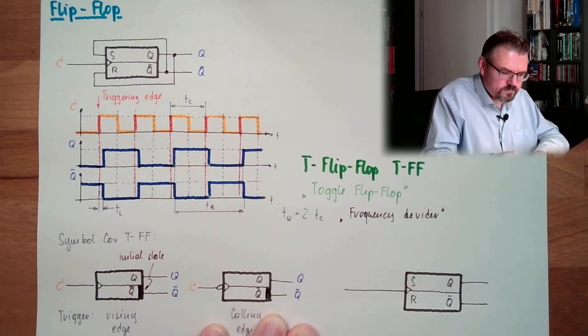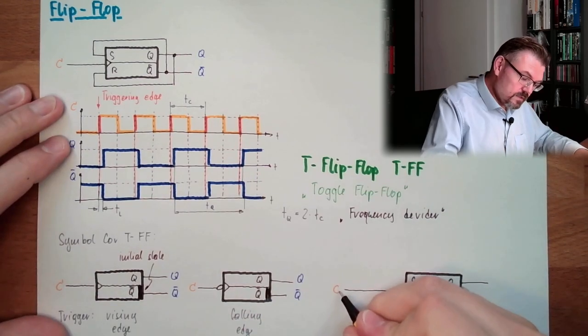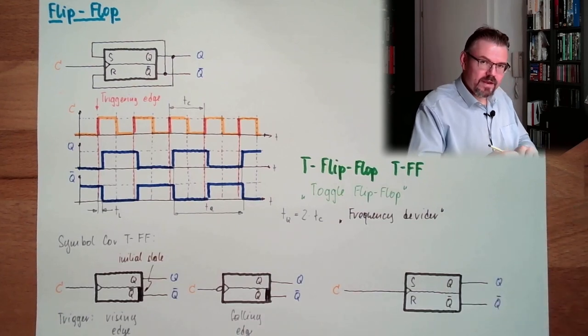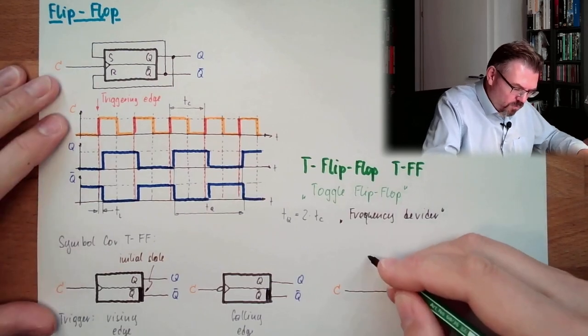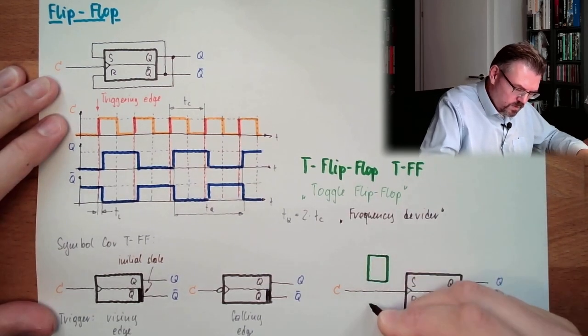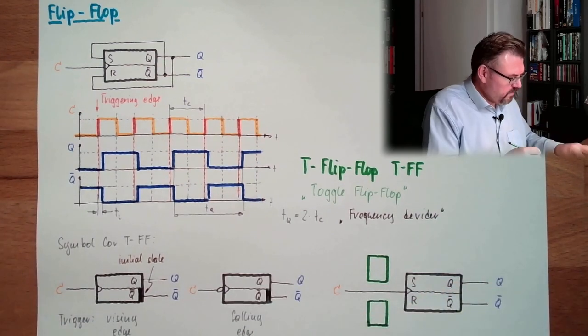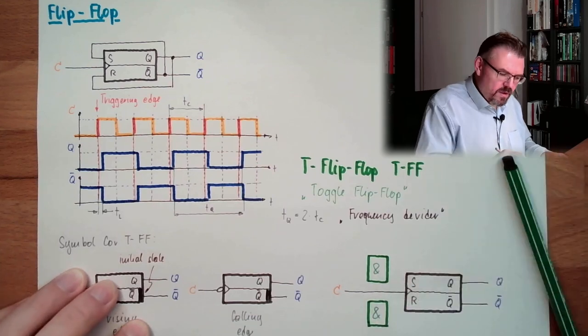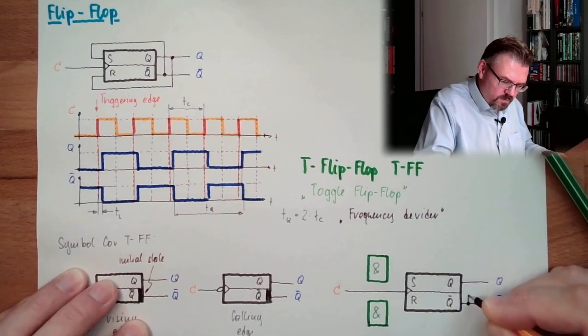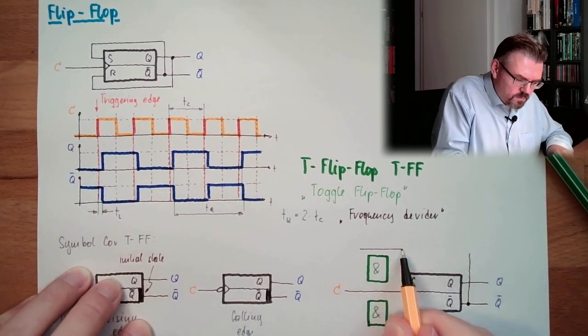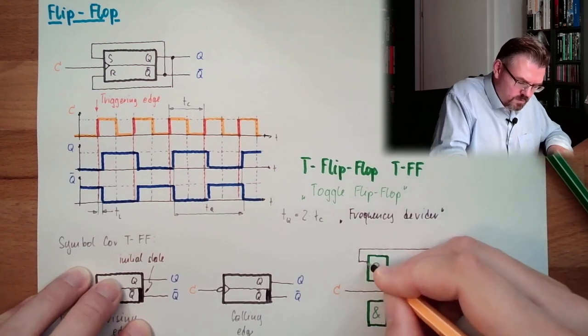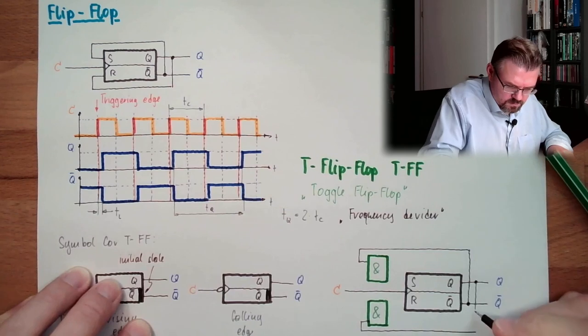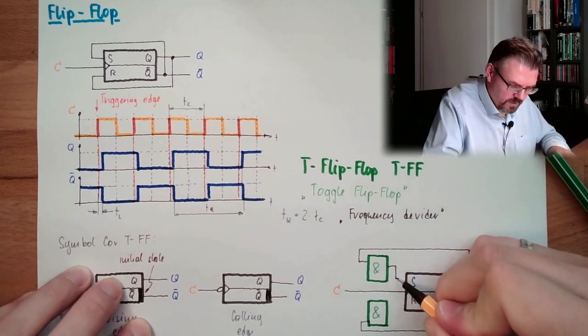Here is the C line. And here we have q and not q. And then we're adding two logic elements. Before, one here, one here. And those two logic elements are AND elements. And actually, we are not directly connecting to S. We are from here, we will connect to here. And from here, we will connect to here. And only from here, we go to S and R.